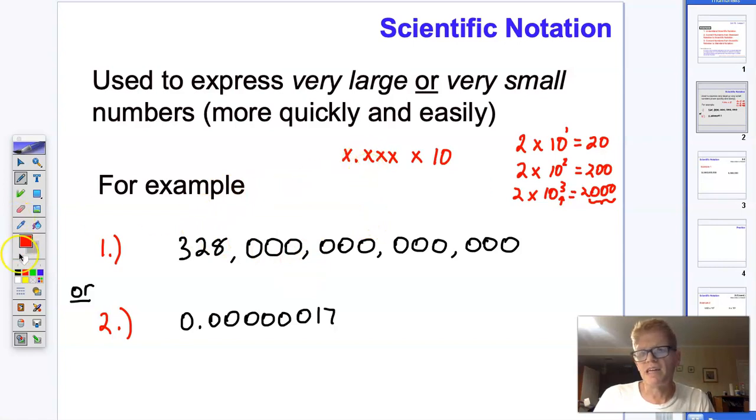So in this case, using the form for scientific notation, I would count the number of decimals back to this first digit right here, 328 to the 3 right there. And I count how far I need to go back. So that's 1, 2, 3, 4, 5, 6, 7, 8, 9, 10, 11, 12, 13, 14.